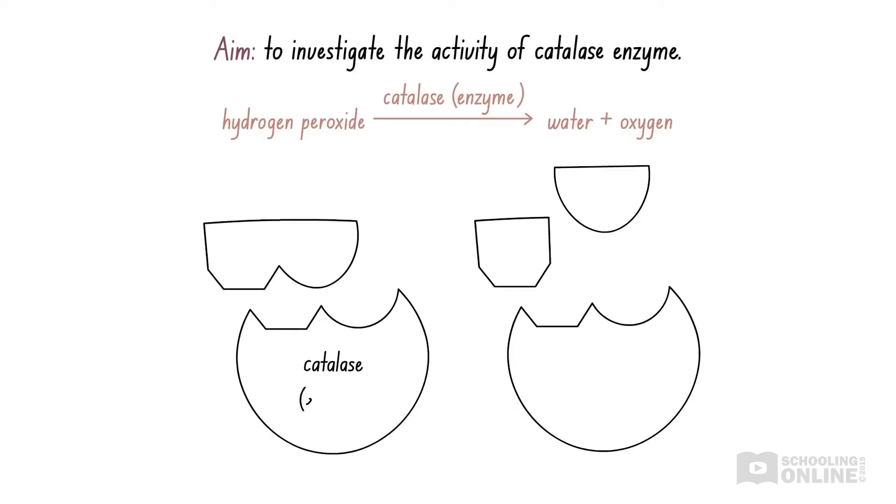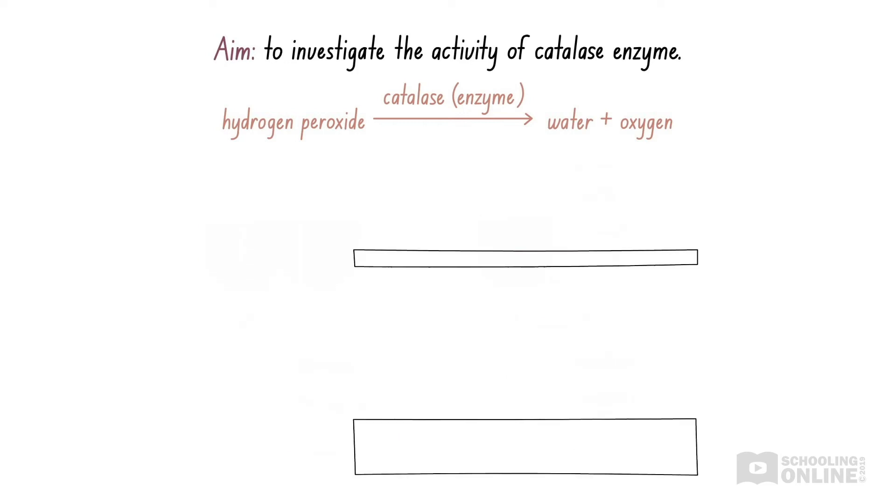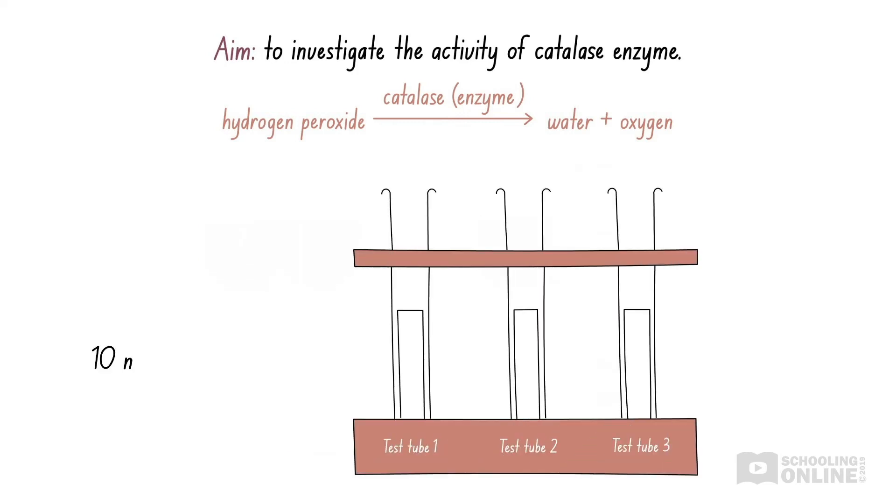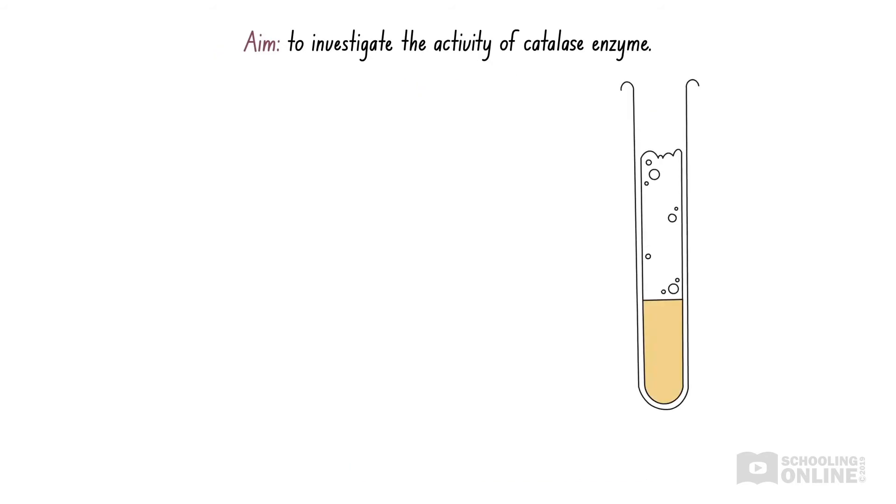Let's look at another experiment, where we investigate the activity of catalase. Catalase is an enzyme that speeds up the decomposition, or breakdown, of hydrogen peroxide into water and oxygen. We set up three test tubes, each containing 10 millilitres of hydrogen peroxide solution, with a pH of 7. This means the solution is neutral, rather than acidic or basic. Then, one gram of catalase powder is added to each test tube. To determine the rate of each reaction, we measure the height of gas bubbles formed above the reaction mixture.